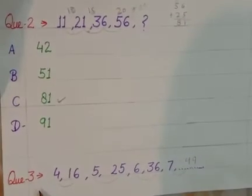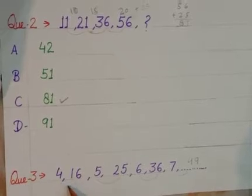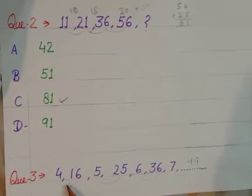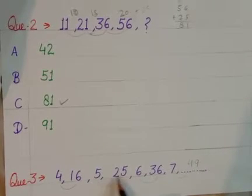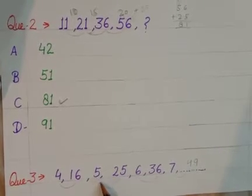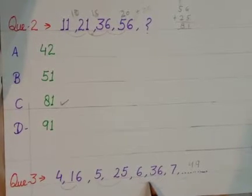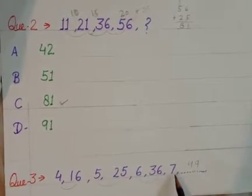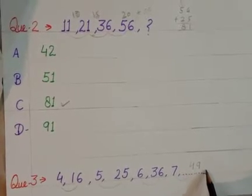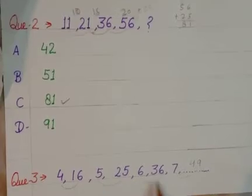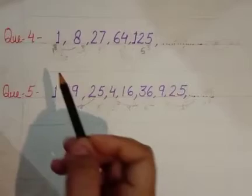Question number 3: we have to make pairs. 4 and 16: 4 times 4 equals 16. Then 5 and 25: 5 times 5 equals 25. Then 6 and 36: 6 times 6 equals 36. Next what is it? 7 times 7 equals 49. Is that clear, beta? You have to understand the pairing. Okay?